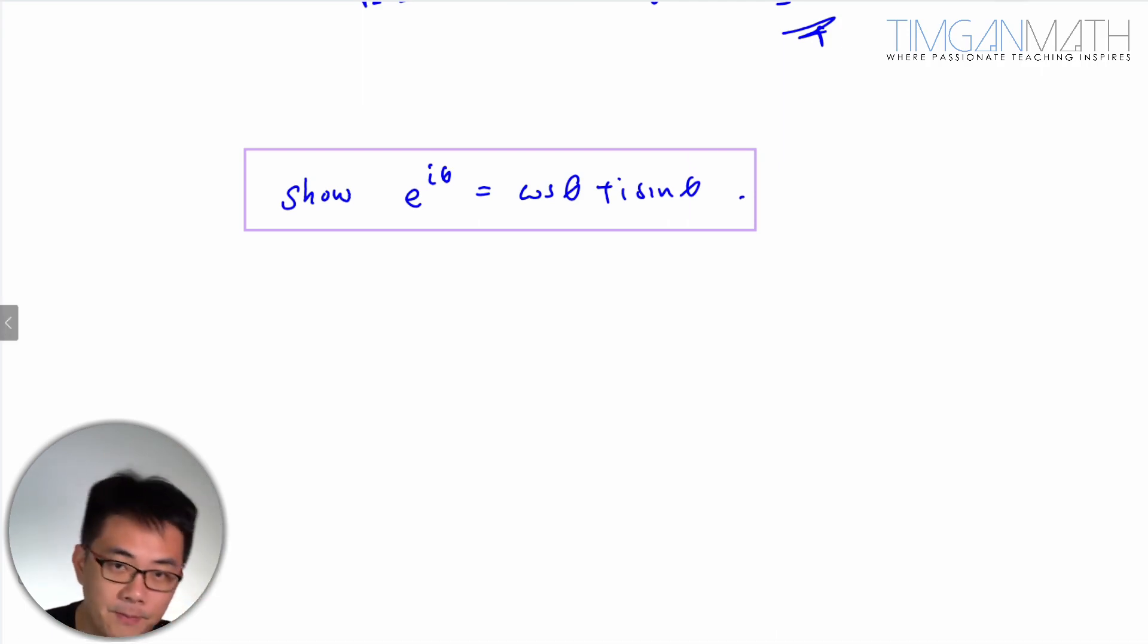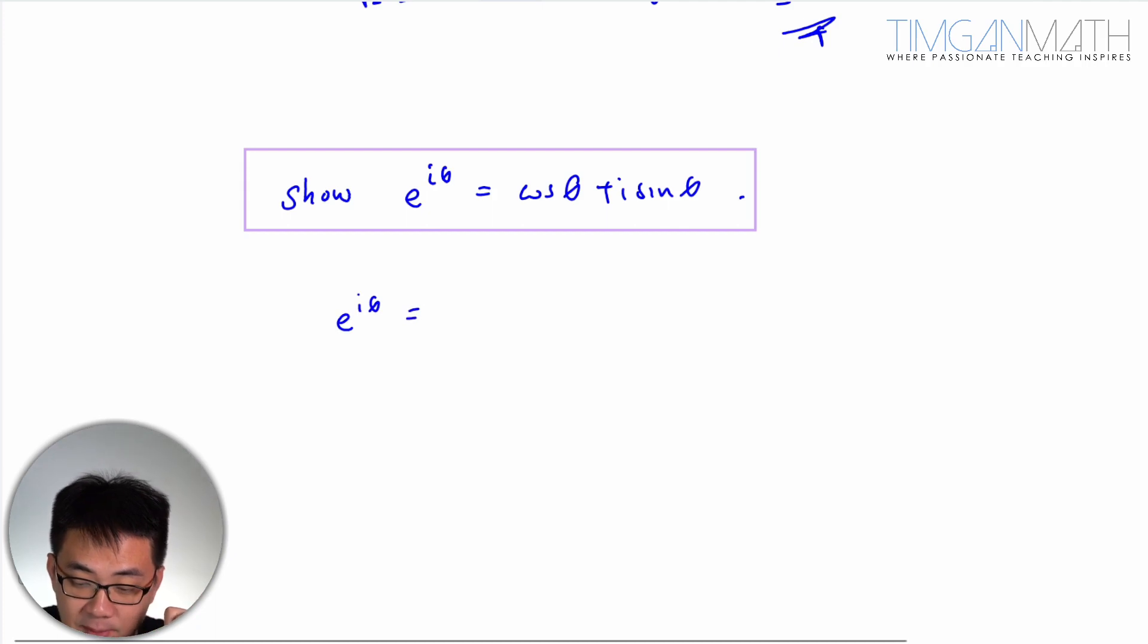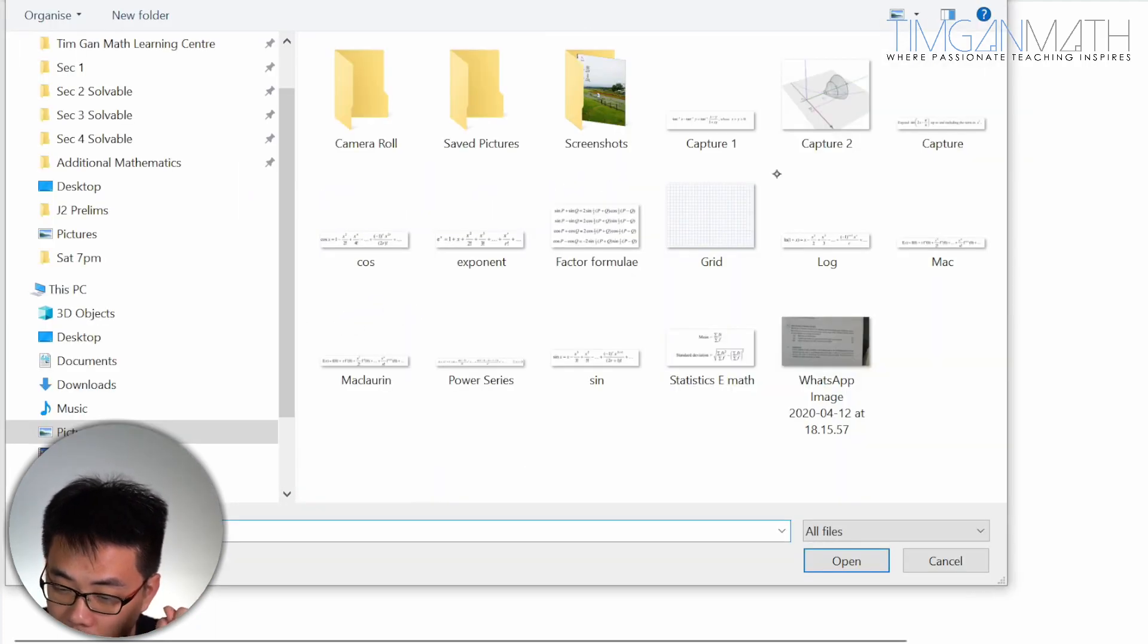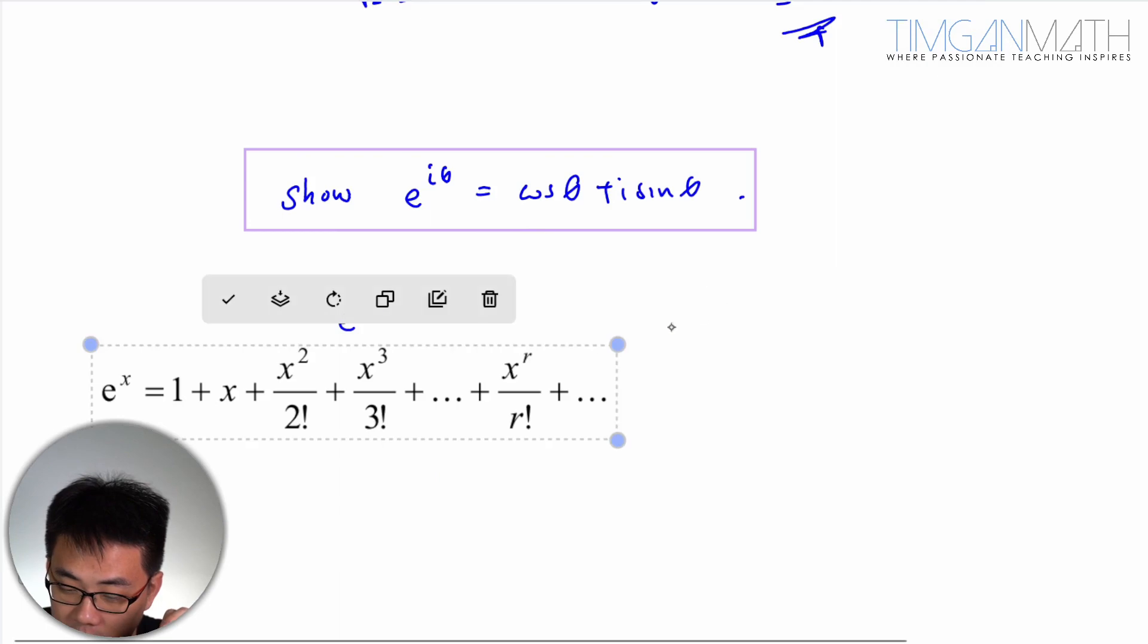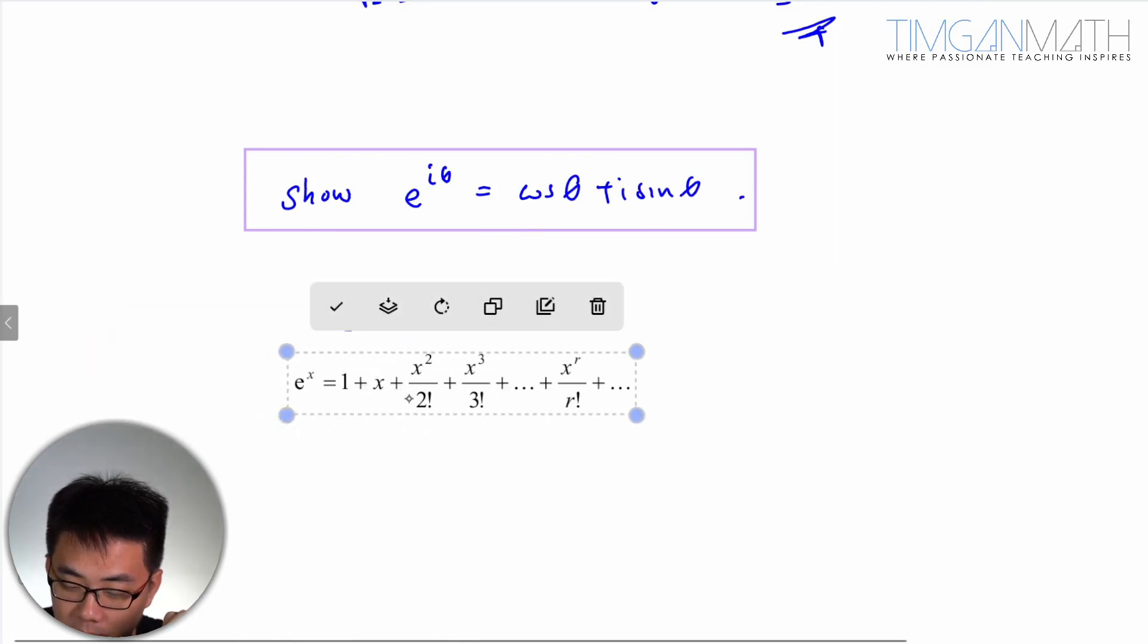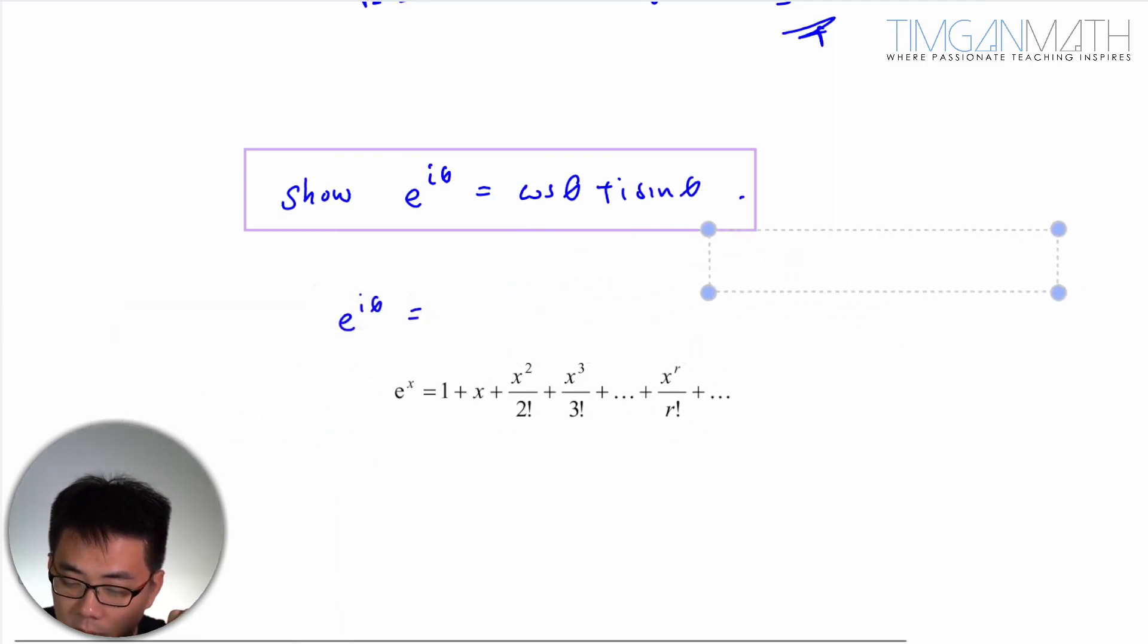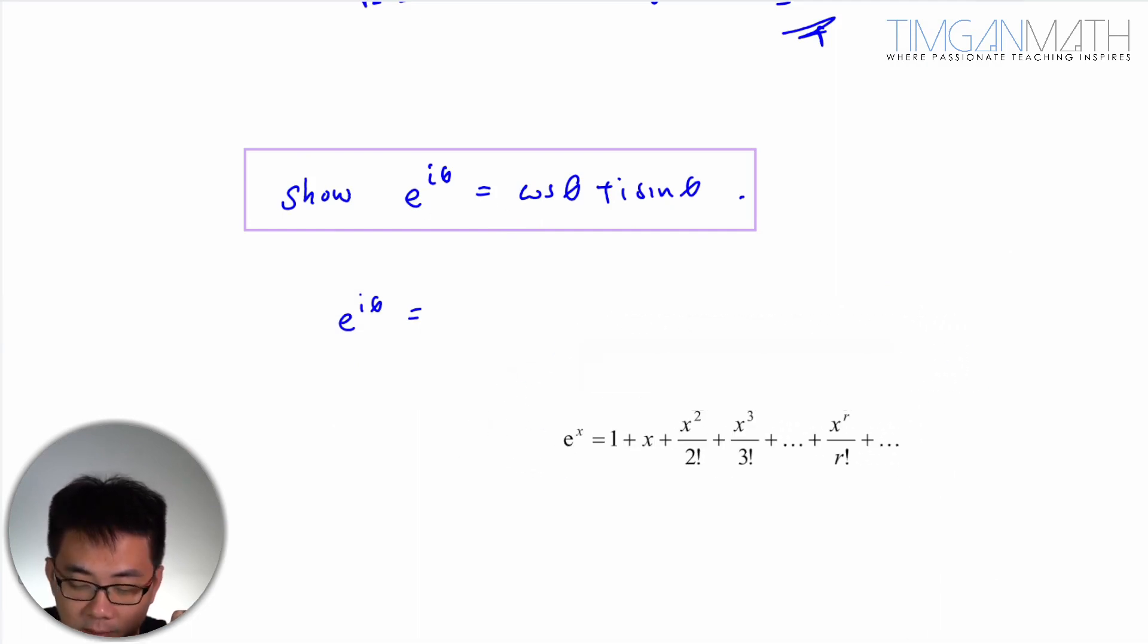You start off by using the standard series. These are all variables so it's fine. What you show is actually e^(iθ) using the exponential series here. I want to show this using MF26.